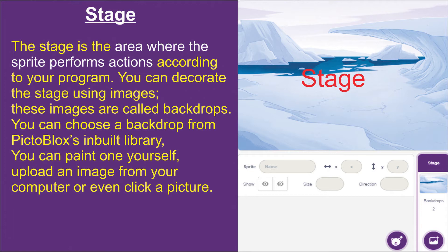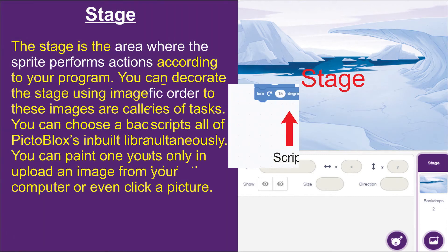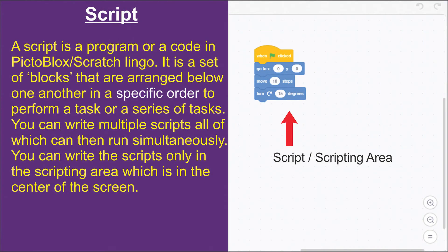You can choose a backdrop from PictorBlock's inbuilt library, paint one yourself, upload an image from your computer, or even click a picture. So basically, a stage is the area where the sprite performs actions according to your program. Then we have a script. A script is essentially the scripting area — the white portion in the center.